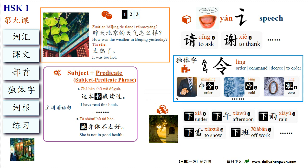Hi everyone, welcome back to daily中文, 每日中文. Today, let's learn from HSK standard course. We will study three dialogues, related grammar points, and a sentence pattern 主位位语句, the radical 言, the single component character 令, and the word root 下.